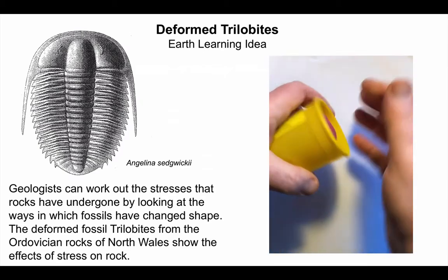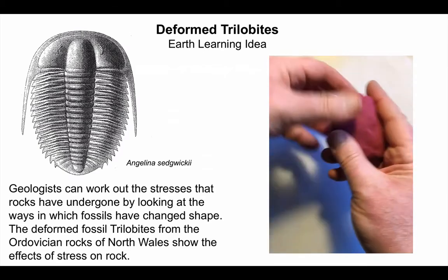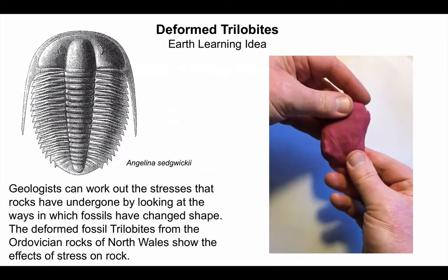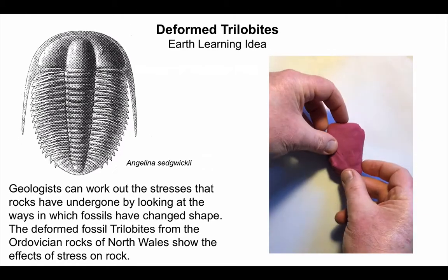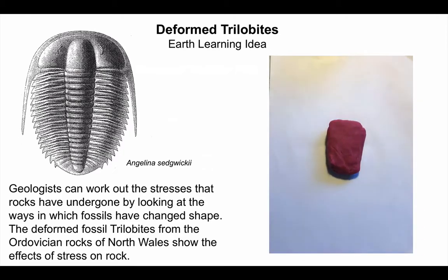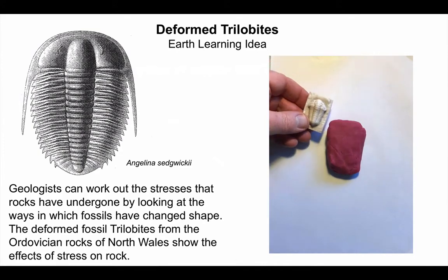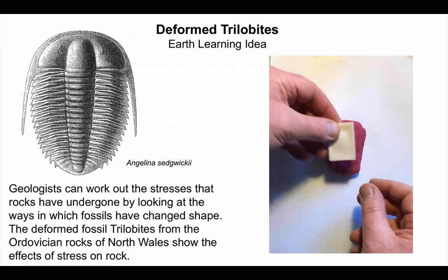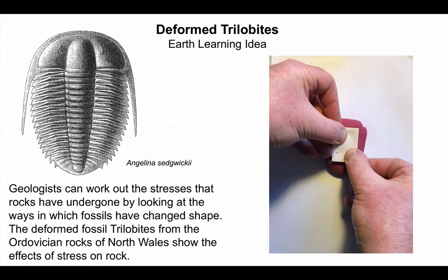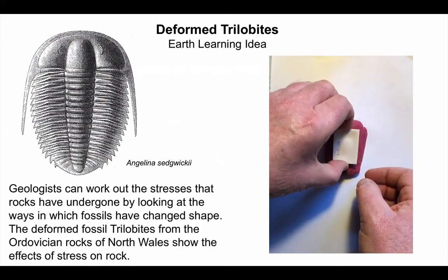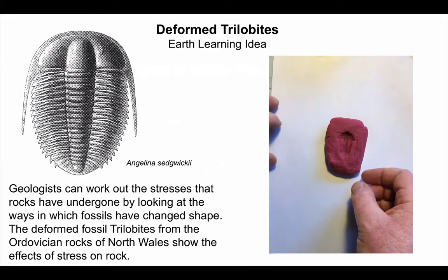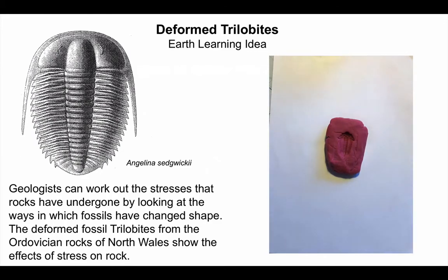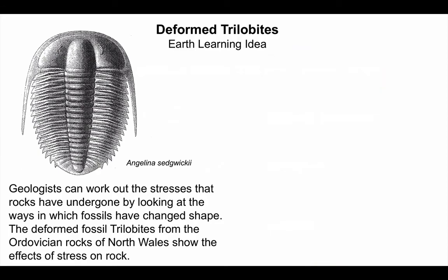If we get an oblong piece of Play-Doh — I'm using here a resin cast of a fossil, but you can use a shell, or even perhaps a toy car, something that has a regular shape — make an imprint into the Play-Doh, and we have a model of the cast of a fossil. We're ready to apply some stress.